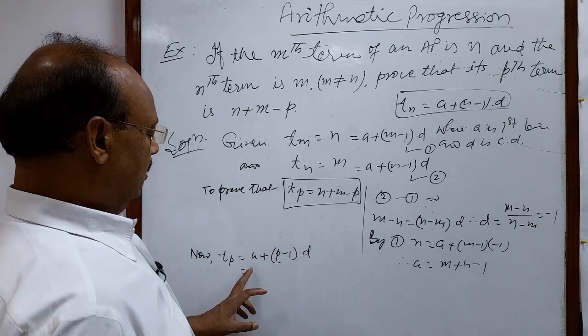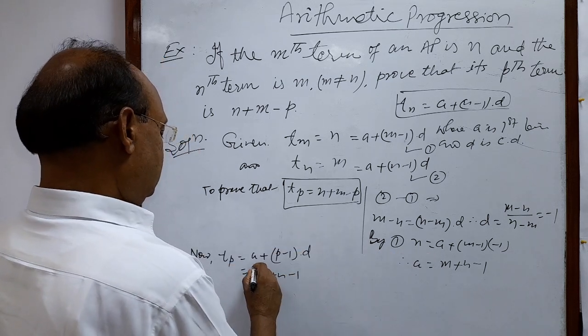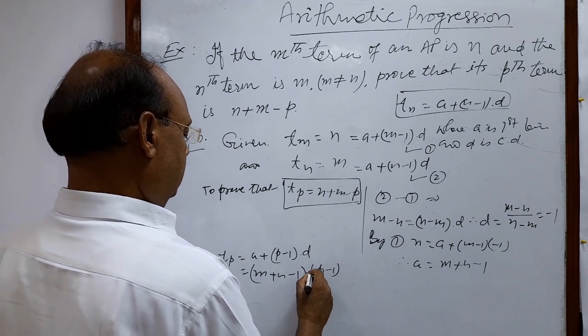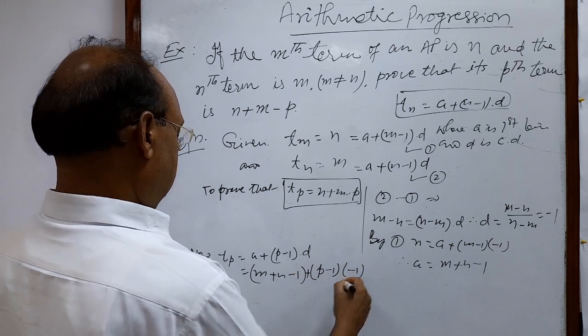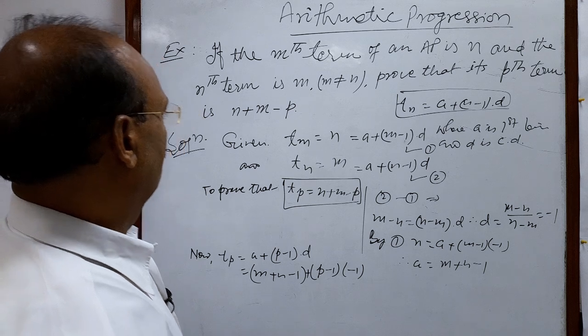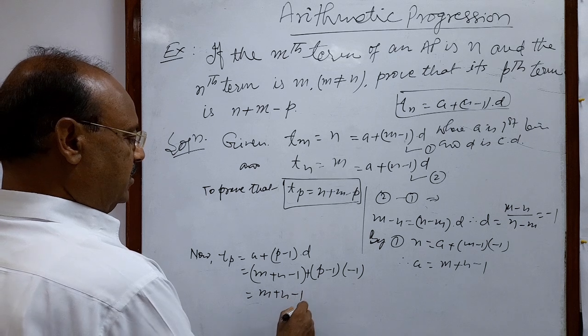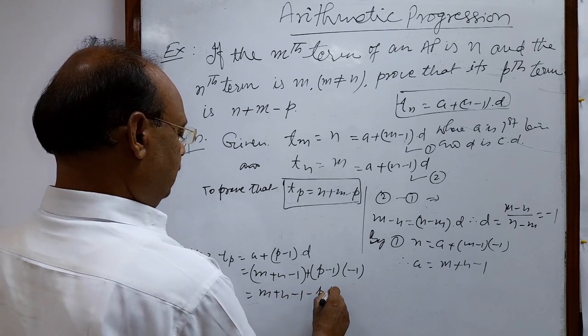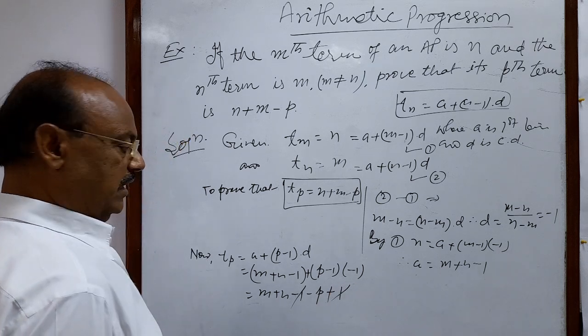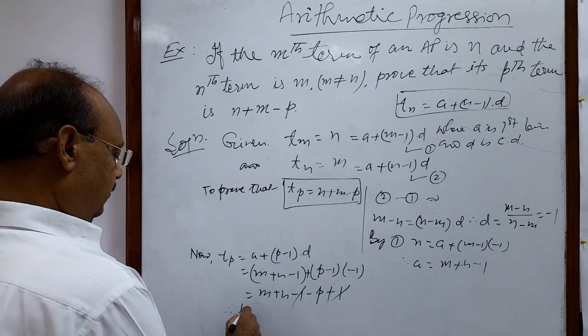Putting the values of a and d here, we get (m plus n minus 1) plus (p minus 1) times (minus 1). This equals m plus n minus 1 minus p plus 1.